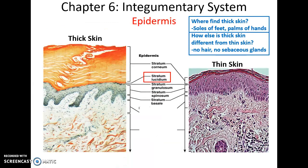Here's an image of thick skin compared to thin skin. Thick skin is only found in the soles of the feet and the palms of the hands. Besides having an extremely thick stratum corneum and also a stratum lucidum, thick skin is further differentiated from thin skin because it has no hair follicles, and with no hair follicles there are also no sebaceous glands or oil glands.